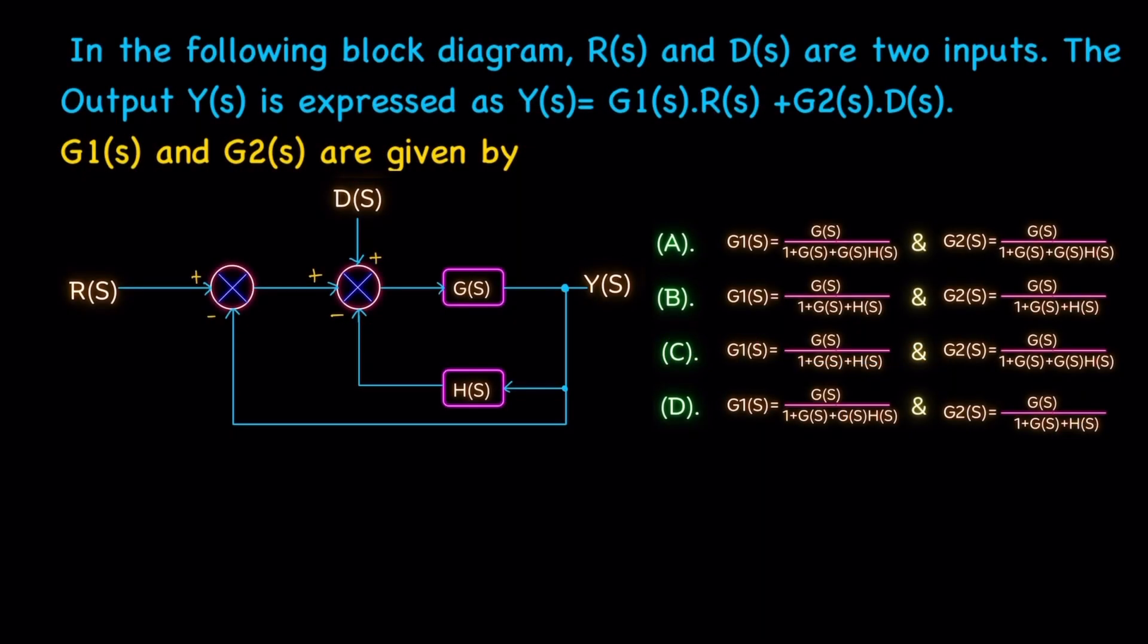In the following block diagram, R and D are two inputs. The output Y is expressed as Y equals G1 R plus G2 D, and G1 and G2 are given by here. So for the options given, we need to pick which one.